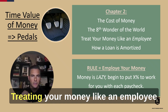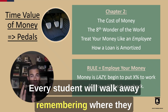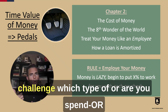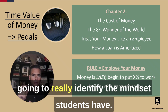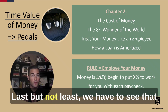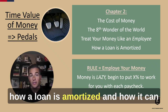Treating your money like an employee is a term and a concept every student will walk away remembering, where they look at every dollar as an employee and challenge: which type of '-or' are you? Spend-or? Save-or? Invest-or? That section is going to really identify the mindset students have. Then we have to see the brake pedal — the opposite side — and how a loan is amortized and how it can work against us, but also be a resourceful tool. We do not discredit the use of other people's money.